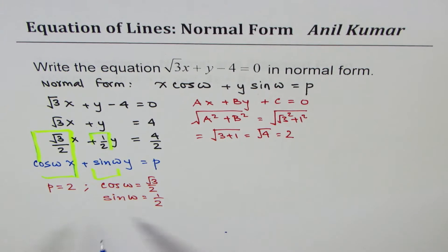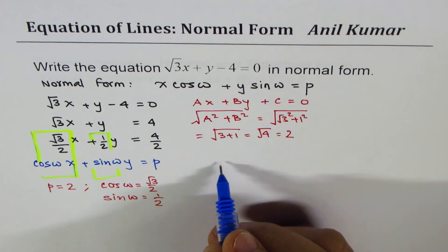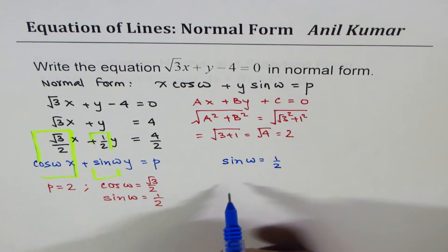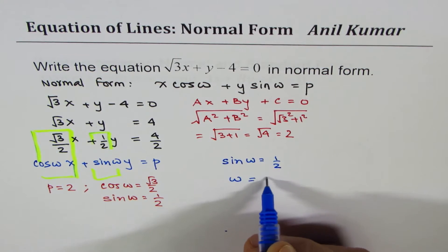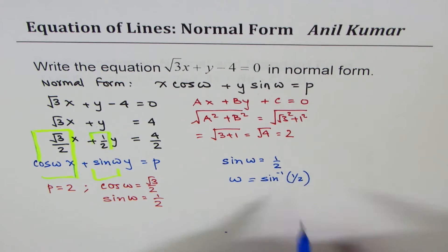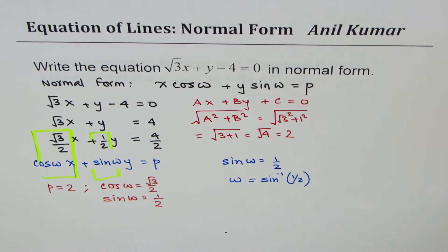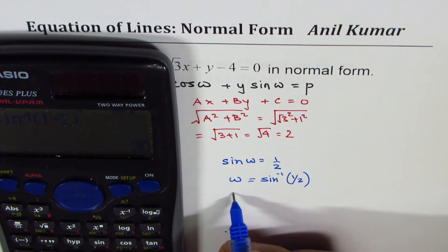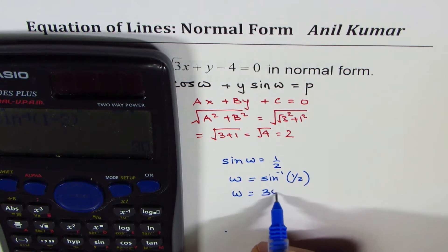Knowing this, we can find what the angle is. If sin ω = 1/2, then ω = sin⁻¹(1/2) = 30°. You could always use the standard triangle, but it is better to follow a method. So ω = 30°.